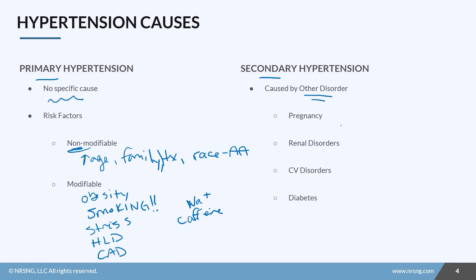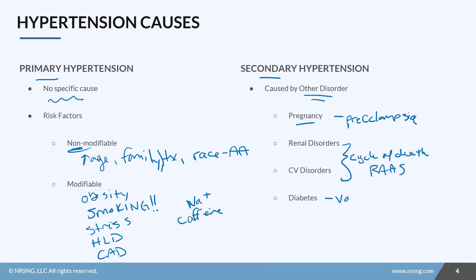With secondary hypertension, the most common causes are pregnancy — we'll see this in OB when we discuss preeclampsia and eclampsia — renal disorders and cardiovascular disorders, which tend to exacerbate each other (remember the cycle of death with the renin-angiotensin-aldosterone system), and diabetes, which at its core is a vascular disorder that puts a lot of stress on the vascular system.